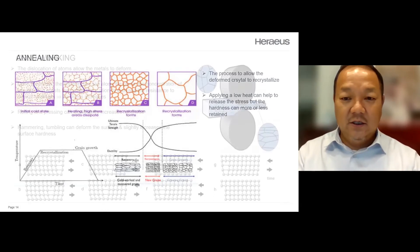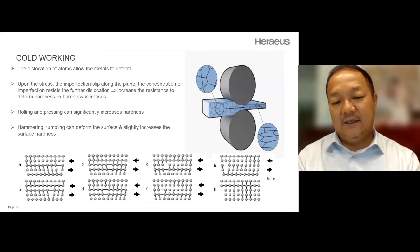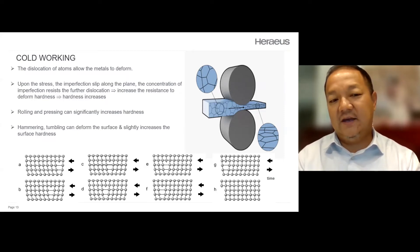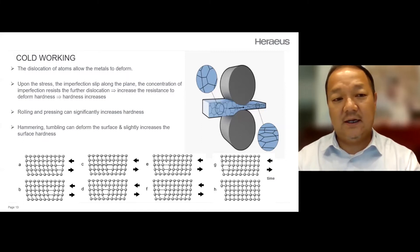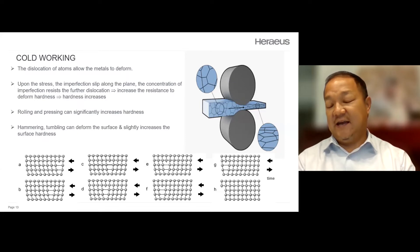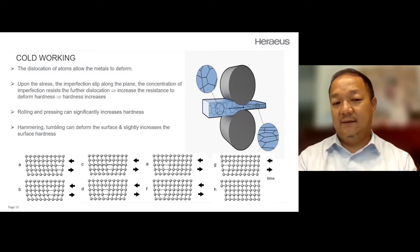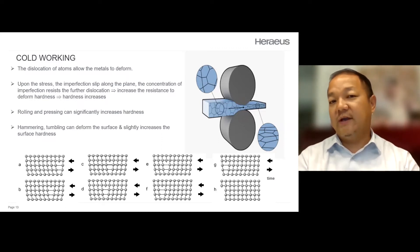You may ask: if I have a casting item which I cannot roll down, how can I increase the hardness? Actually, we can do surface deformation. If you hammer or tumble the casting pieces on the surface, the surface will be deformed and it can also slightly increase the surface hardness. This can help substantially for some alloys like 24 or 22 carat — by hammering or tumbling, you can slightly harden the alloy due to this cold working effect.